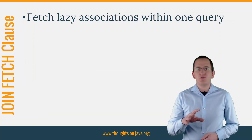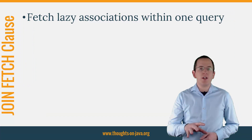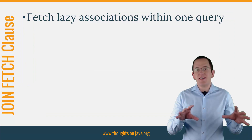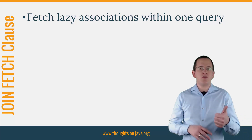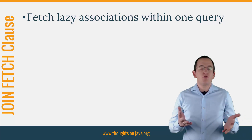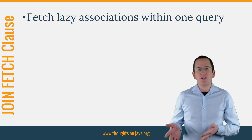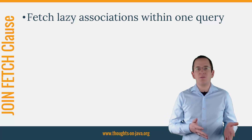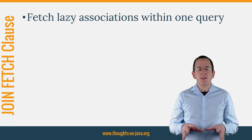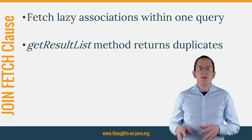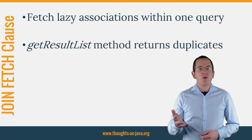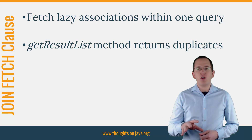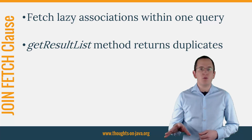JPA's JOIN FETCH clause provides a great and easy-to-use way to load an entity and its lazy associations within one query. From a performance point of view, this is much better than using additional queries to initialize the associations — especially if you load a list of entities. But if you use this clause for the first time, you might be surprised that the list of entities returned by the getResultList method contains duplicates.